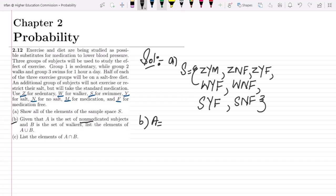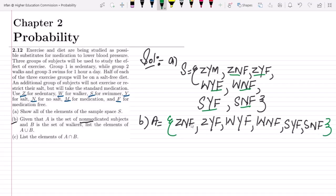Let me first write the elements of A, which are the non-medicated subjects. The non-medicated subjects are these seven. So let me write them: ZNF, ZYF, WYF, WNF, SYF, and SNF - all the items which have F in their medication, which means these are basically free of any medication.